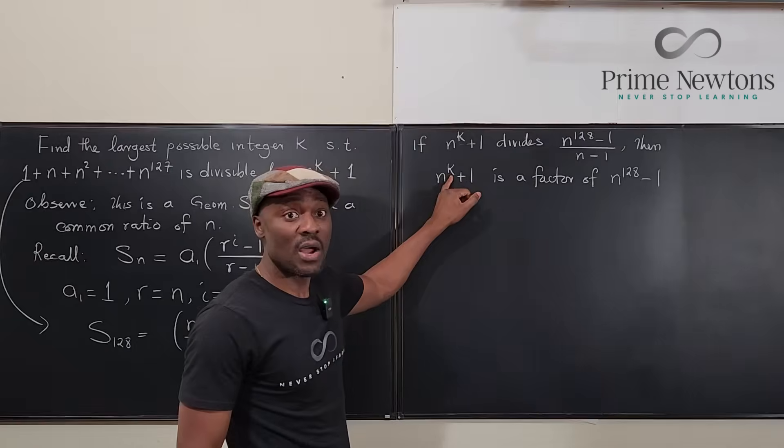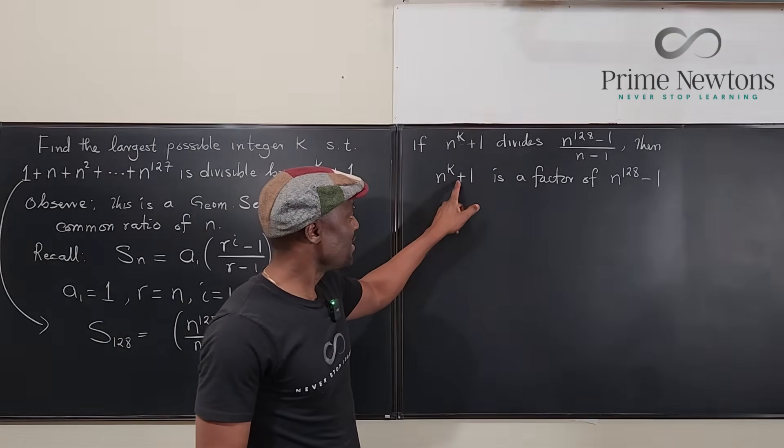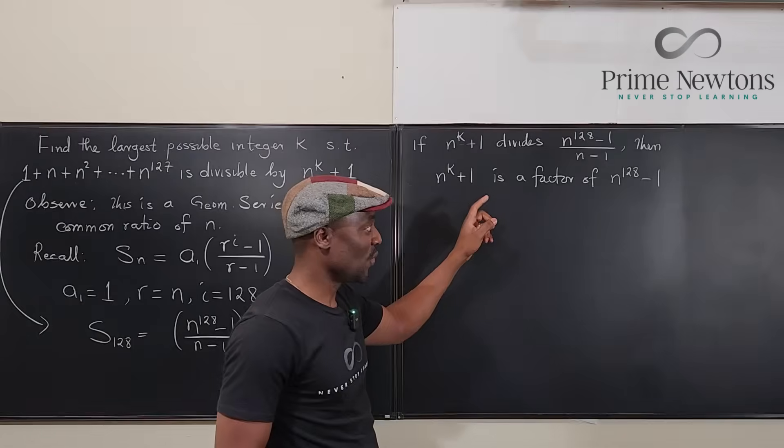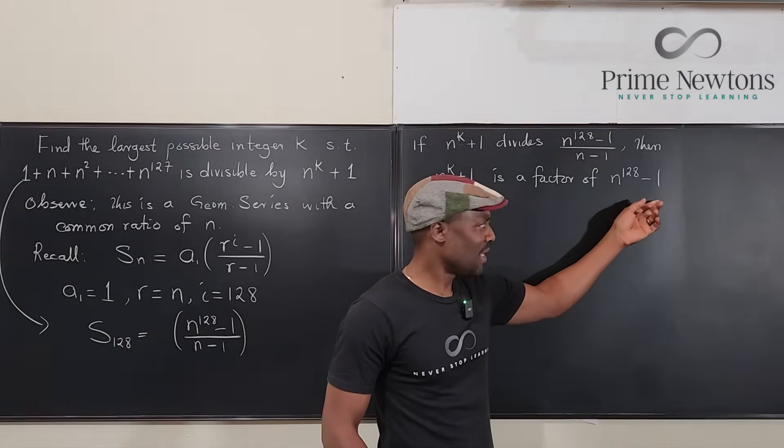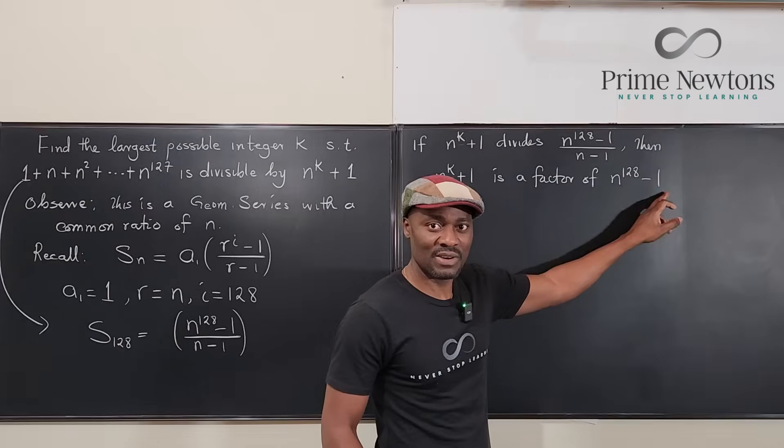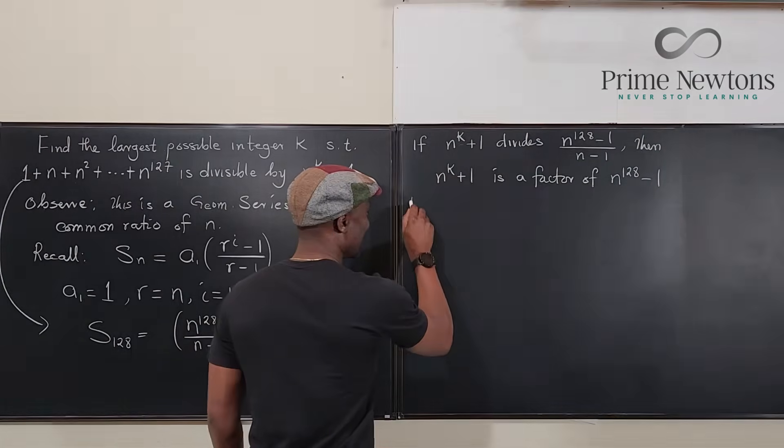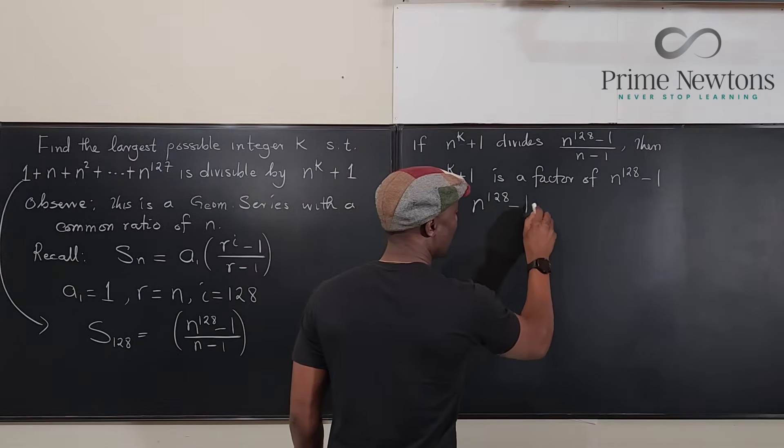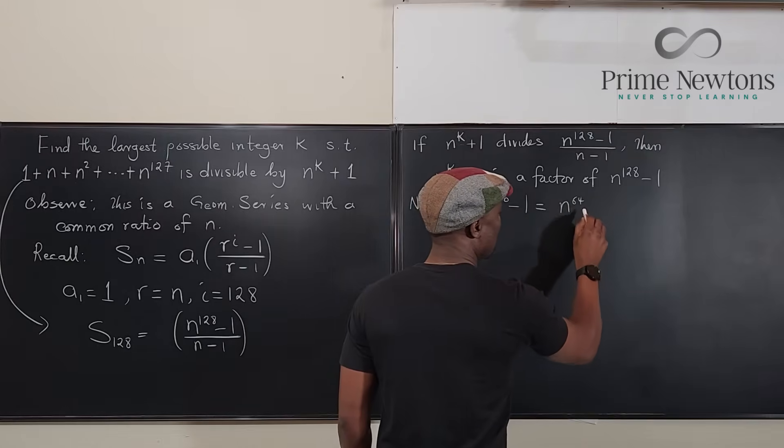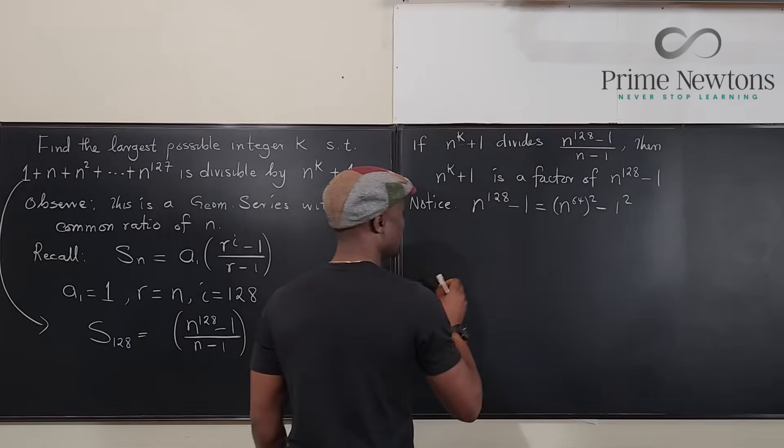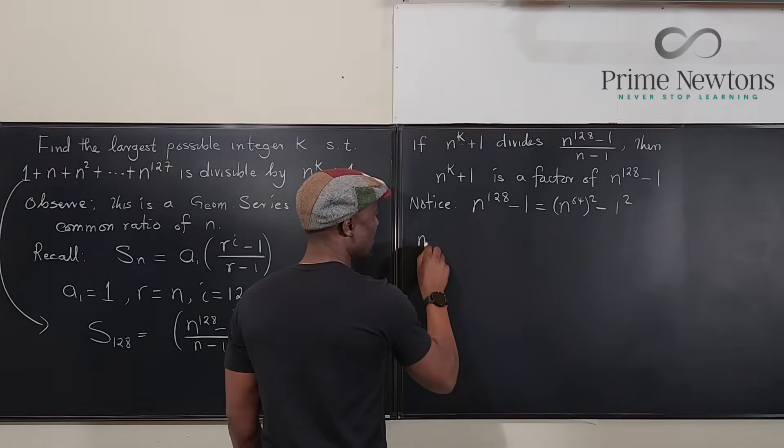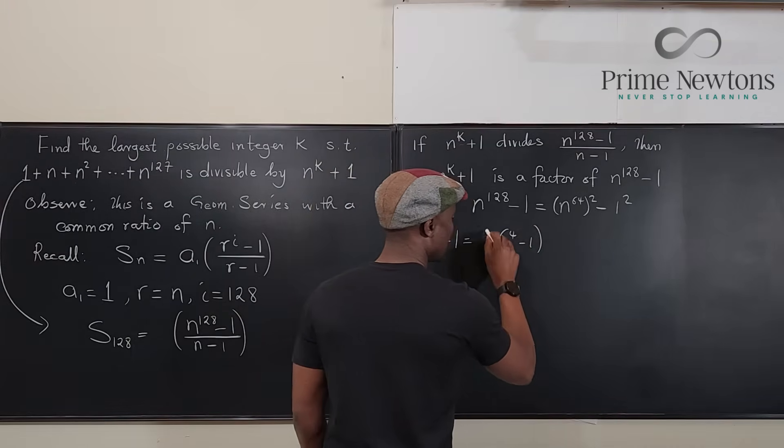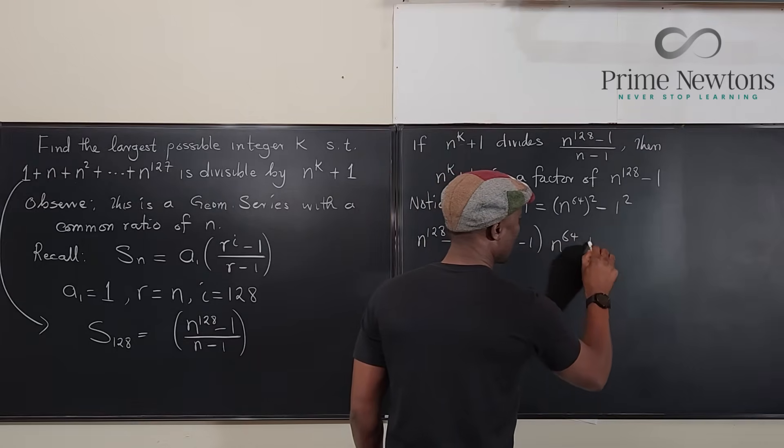We would have said the answer was 128, but this is plus 1 and this is minus 1. So we need what we're dividing to have a plus. The only manipulation you can do here is to see this, because the exponent is even, as the difference of two squares. Notice that n to the 128 minus 1 is the same thing as n to the 64 squared minus 1 squared, which is the difference of two squares. So we have n to the 128 minus 1 can be written as n to the 64 minus 1 times n to the 64 plus 1.